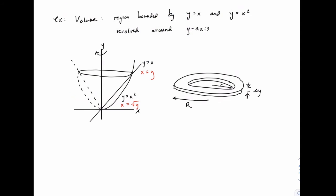So the center line here is the y-axis, which is the line x equals zero. The inner edge is described by the line x equals y, and then the outer edge is described by the parabola x equals the square root of y, which means that our inner radius is just y minus zero, and our outer radius is just the square root of y minus zero.